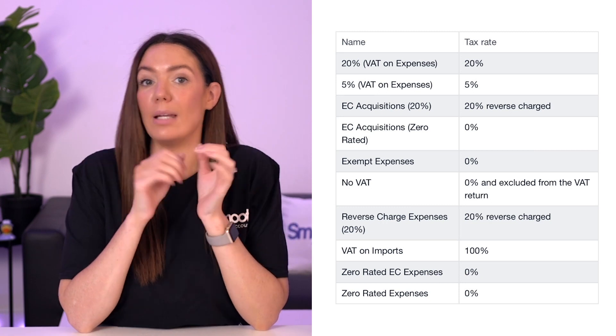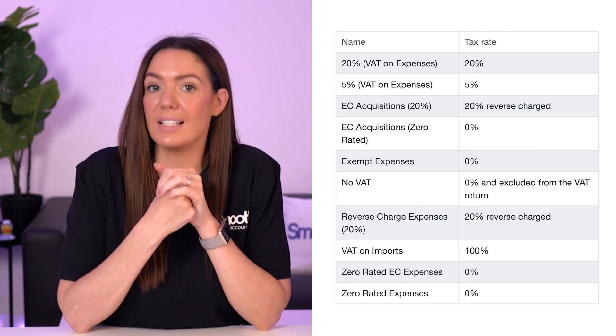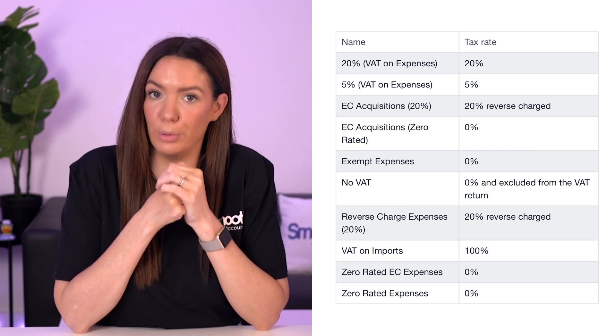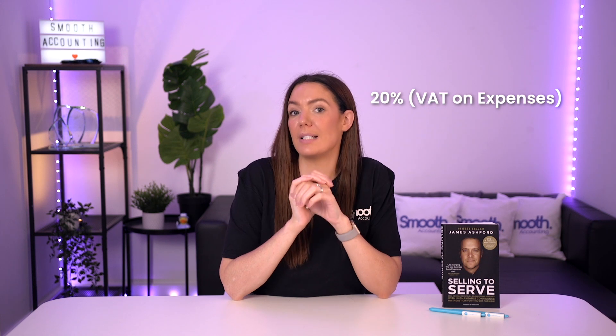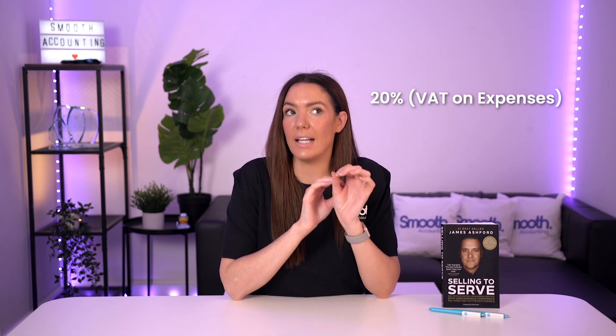This little table shows the name on Xero and the tax rate applicable. So let's look at some examples of which rate you may use and when. If you have a purchase invoice that is showing 20% VAT with a VAT number and it is in your business name, then you would choose 20% VAT on expenses.